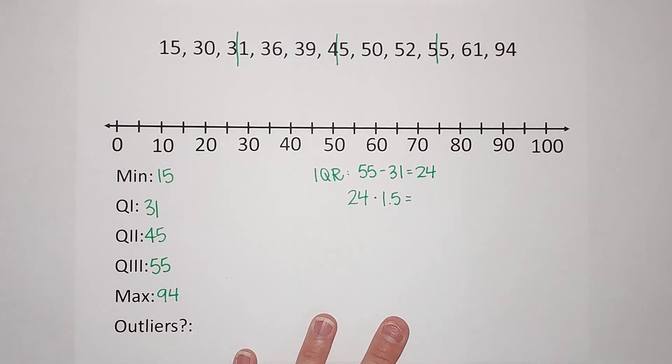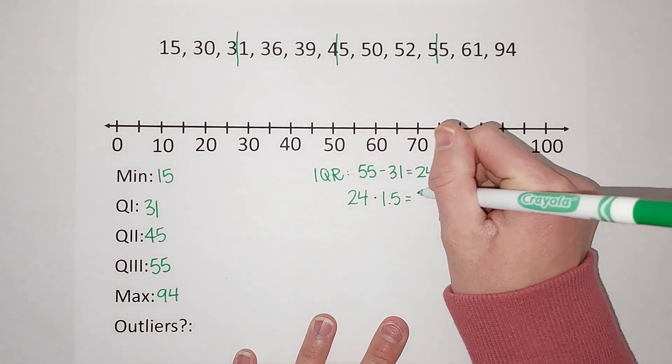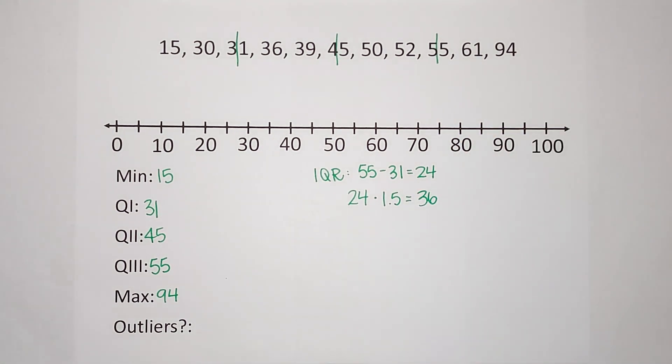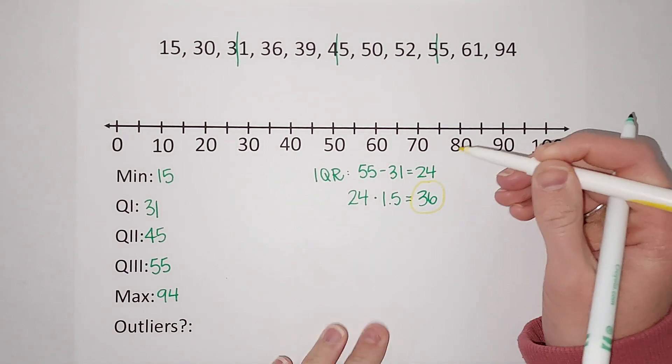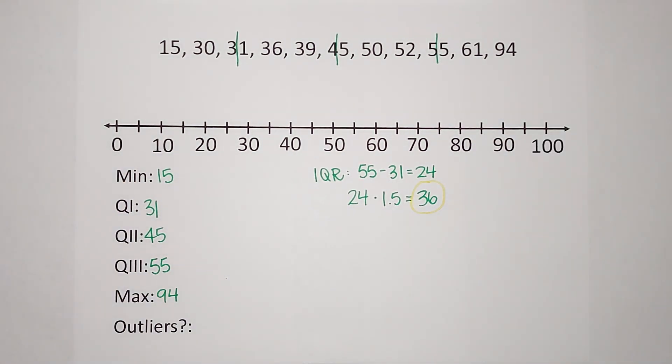What I get when I do that is 36. This is my number that is going to help me figure out if any of these numbers are outliers. So what I do with that number is I'm going to find my lower limit.